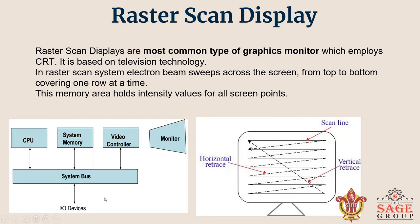As the electron beam moves across each row, the beam intensity is turned on and off to create a pattern of illuminated spots. For example, if we have to print the letter E and we draw its diagram, when the scan line scans each row at a time, where the E letter starts, the scan line scans each row and the illuminated spot turns on or off accordingly.